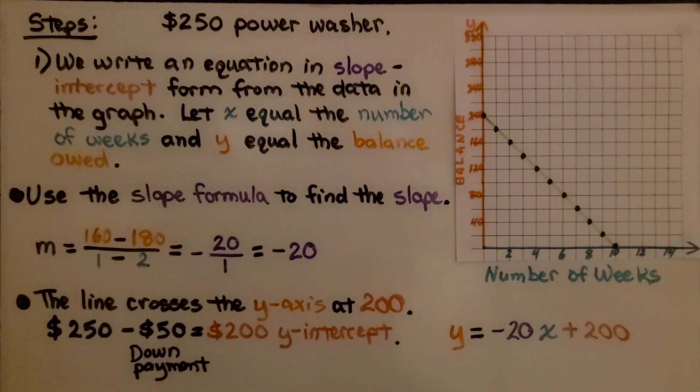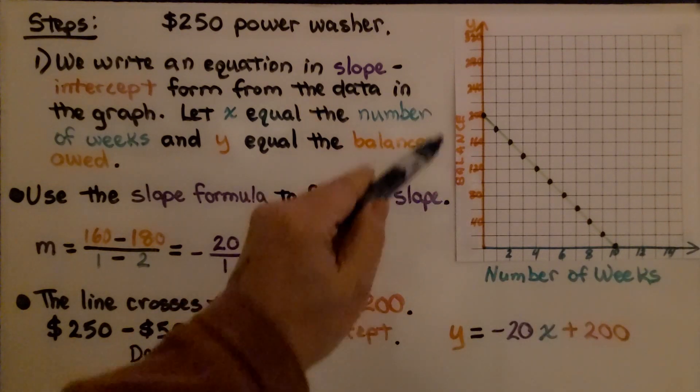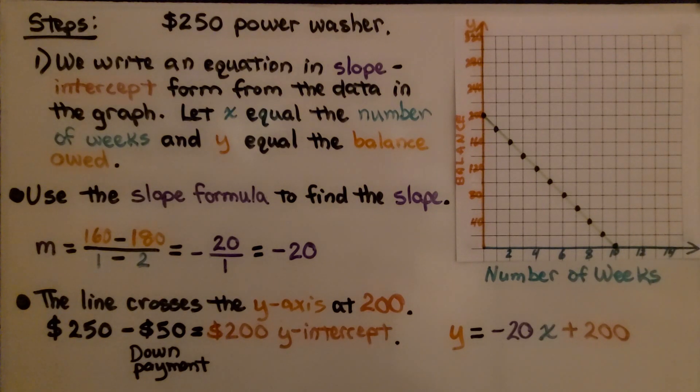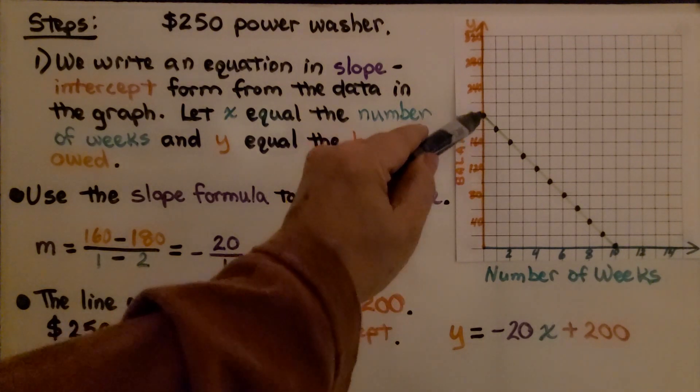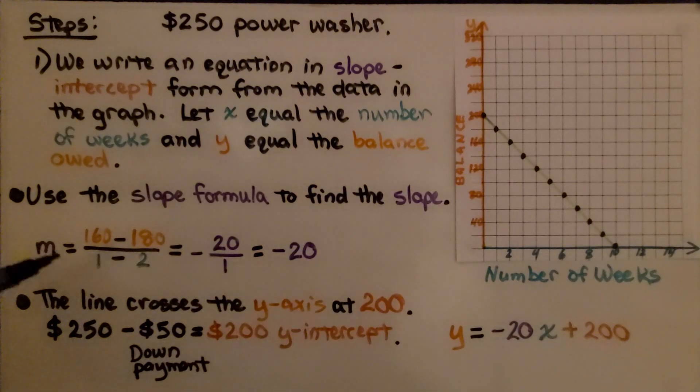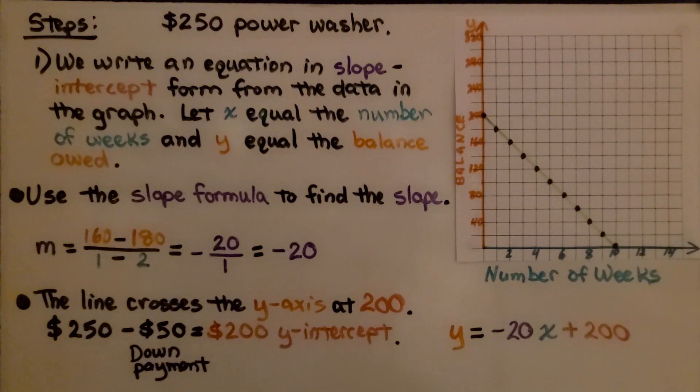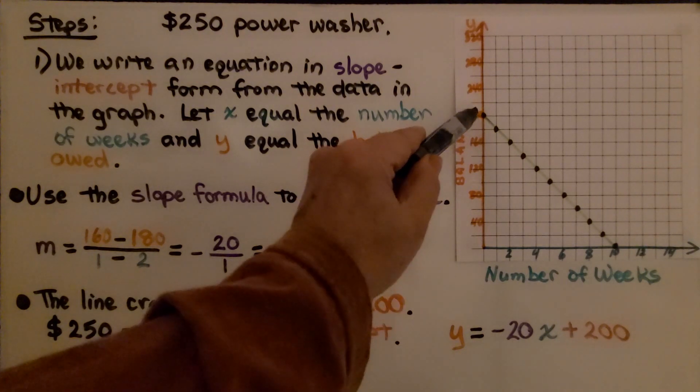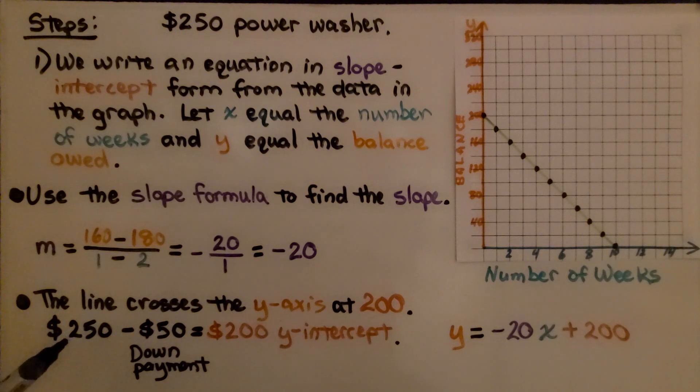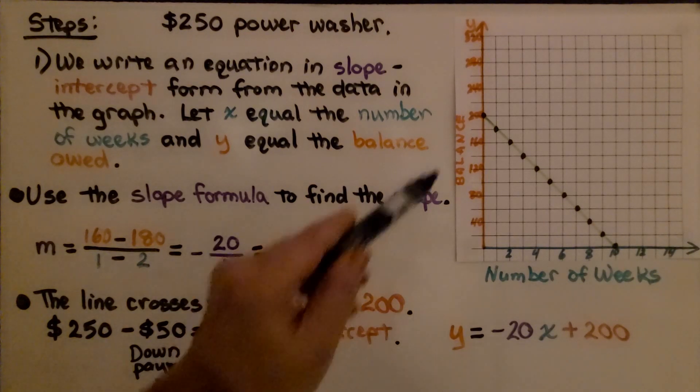We know the power washer costs $250. We write an equation in slope-intercept form from the data in the graph. We're going to let x equal the number of weeks and y equal the balance owed. We use the slope formula to find the slope. We choose two points, do the slope formula, and find that the slope is negative 20. The line crosses the y-axis at $200, but it costs $250 for the power washer. That means there must have been a $50 down payment before he started making the regular payments.